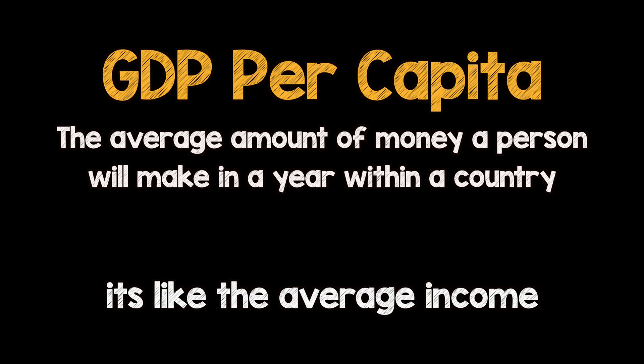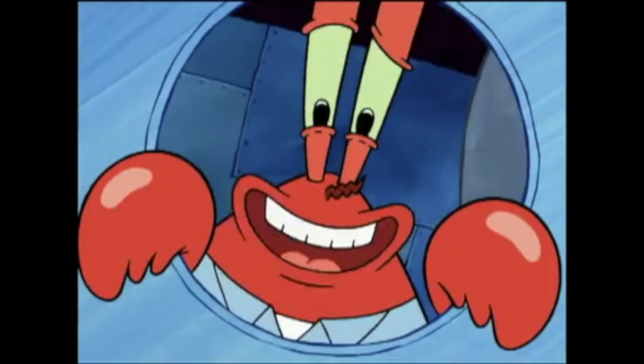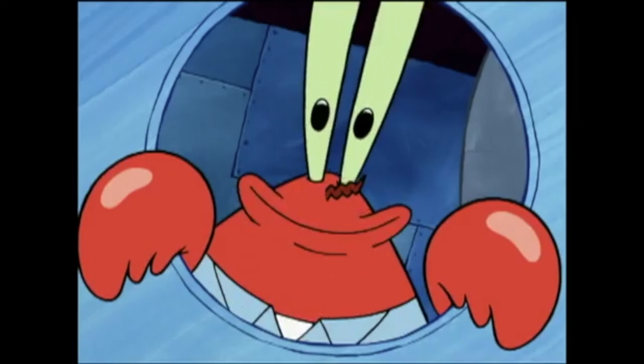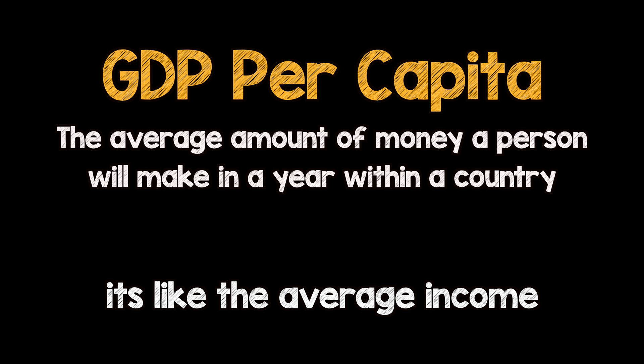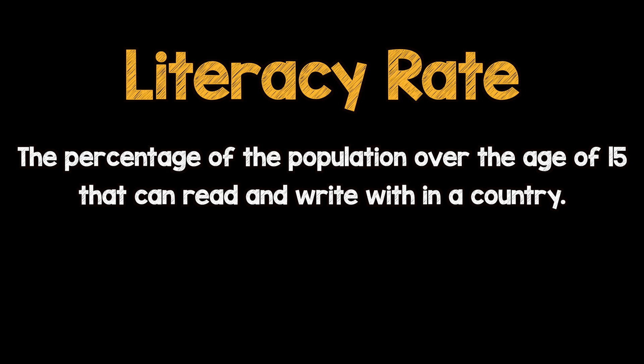Now that we understand what GDP is, let's take a look at GDP per capita. GDP per capita is the average amount of money a person will make in a year within a country. GDP per capita is basically considered the average income of a person in a country.